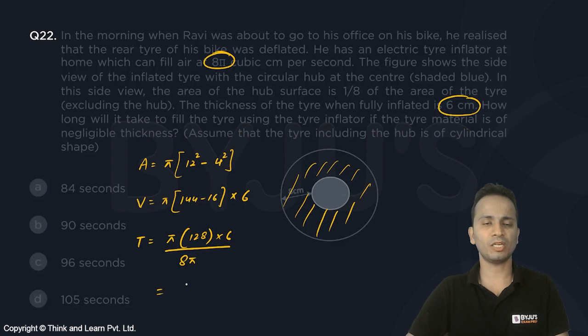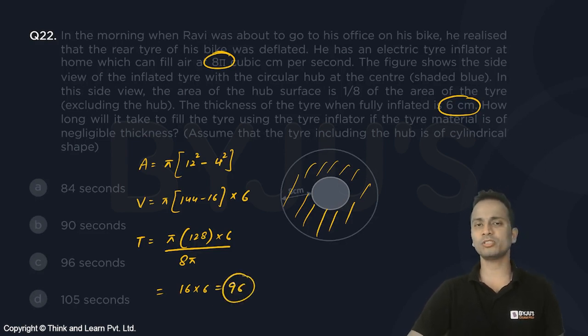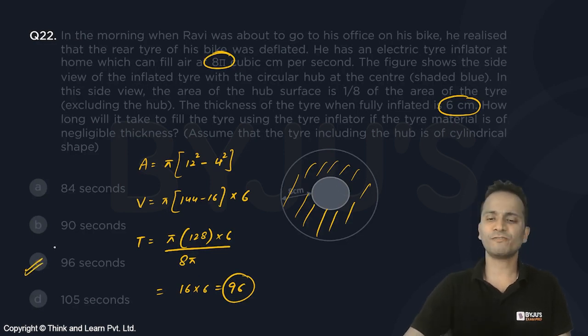So this will be π multiplied by 128 into 6 divided by the rate at which it is filling, which is 8π. I can simplify 128 upon 8 is 16 multiplied by 6, that is equal to 96. So the key was to apply that ratio to get the value of the radius of the hub in less than 15 to 20 seconds. The correct answer for this question should be option C, that is 96 seconds.